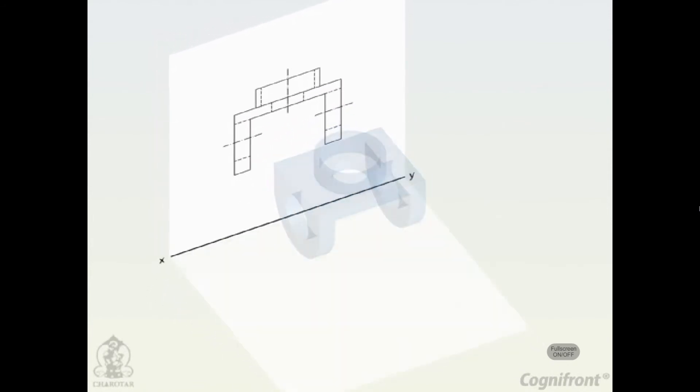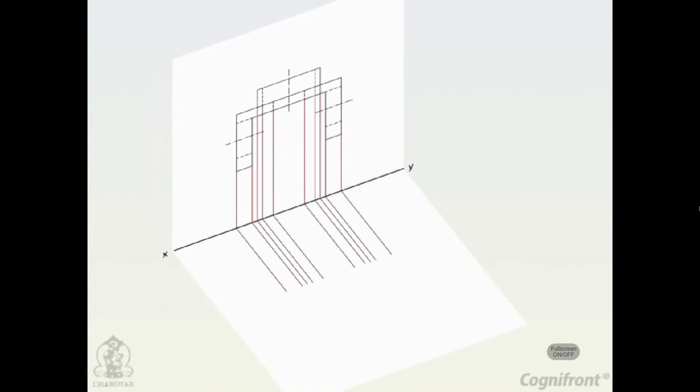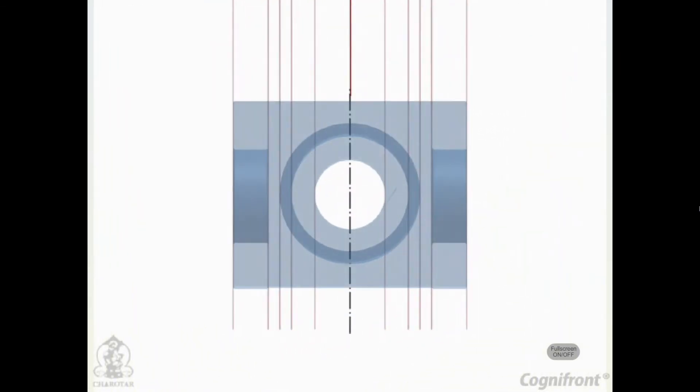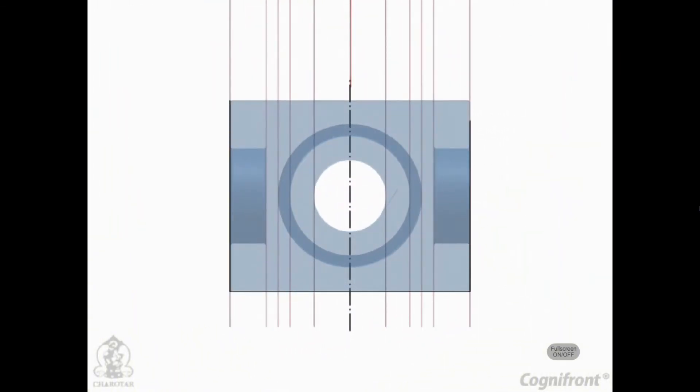Now, to construct the top view, project all details from front view below reference line x, y. Draw a vertical center line from the center of the rectangular slot. The top view of the rectangular slot appears as a rectangle of size 100 mm x 80 mm.